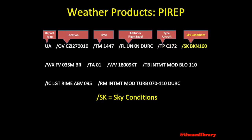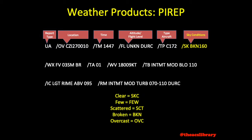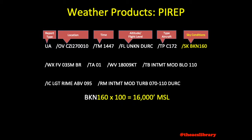Sky conditions are up next, coded /SK. The sky conditions are reported as the three-digit cloud coverage identifier — clear, few, scattered, broken, or overcast — followed by the three-digit cloud height in hundreds of feet MSL. Normally clouds are reported AGL, but in a PIREP they will be reported as height above mean sea level instead.